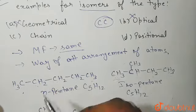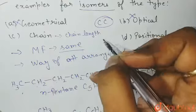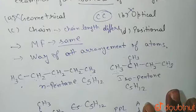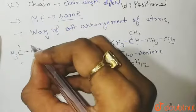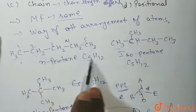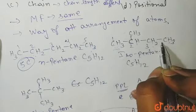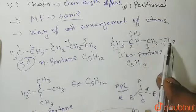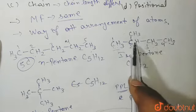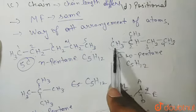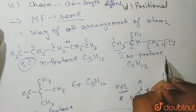Next is chain isomerism, where the length of the main parent chain differs while the molecular formula remains the same. In N-pentane, the entire chain is the main parent chain with 5 carbon atoms. In isopentane, the longest continuous chain has only 4 carbon atoms, with the remaining CH3 becoming a substituent — you get 4 carbons in the main chain regardless of which end you number from.